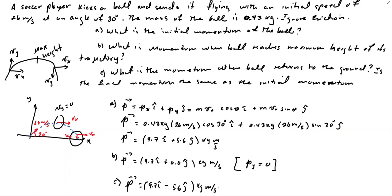Now, is the final momentum the same as the initial momentum? Well, remember that linear momentum is a vector. The magnitude of the final momentum is equal to the magnitude of the initial momentum, but the direction of the final momentum is not the same — the angle with respect to the positive x-axis is going to change. So in terms of magnitude they are the same, but they are not the same vector.